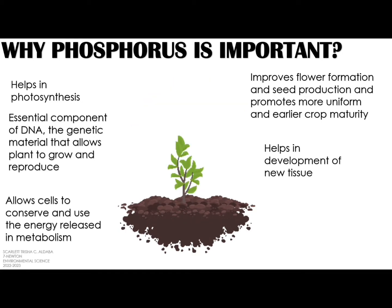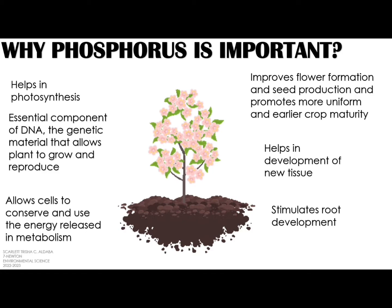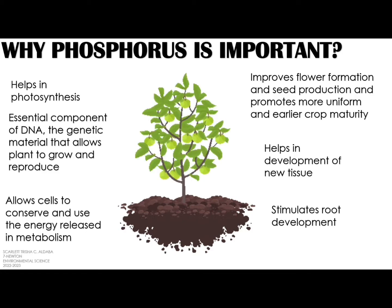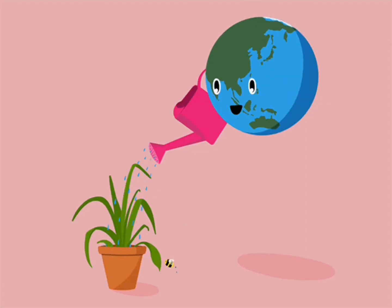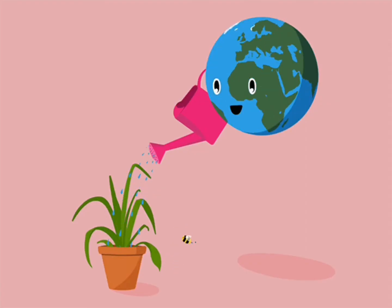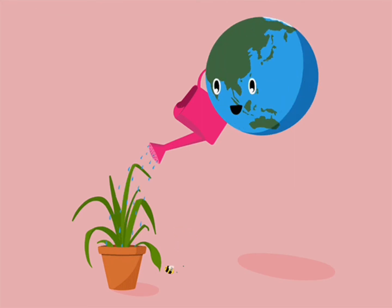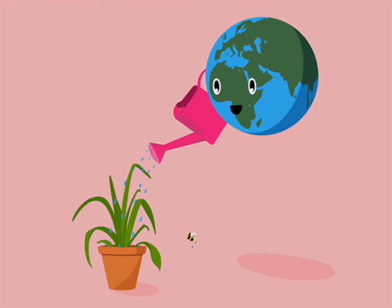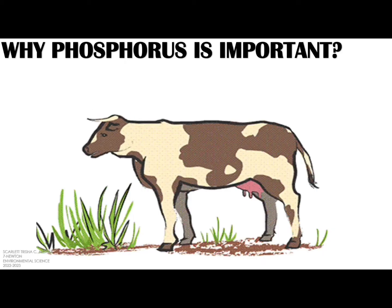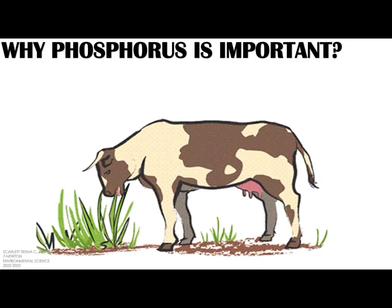Phosphorus improves flower formation and seed production and promotes more uniform and earlier crop maturity. It also helps in the development of new tissues and stimulates root development. Without phosphorus, plants will not grow, and without plants, life on Earth will be impossible.